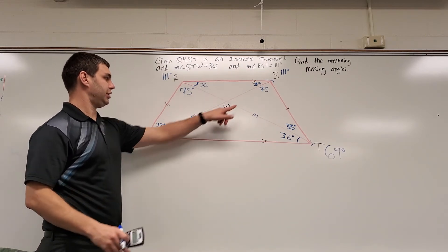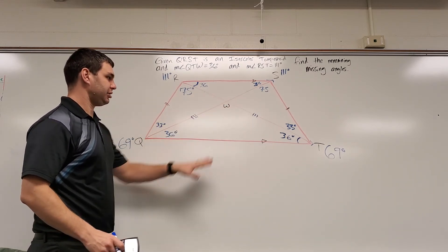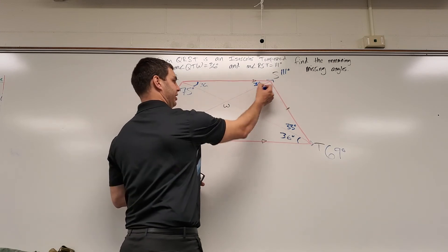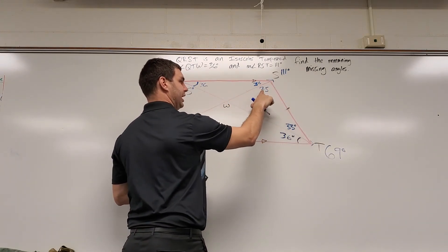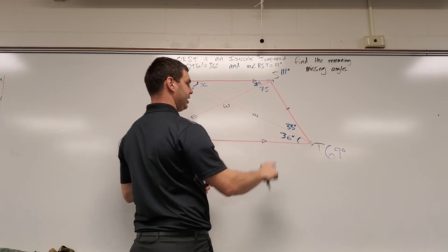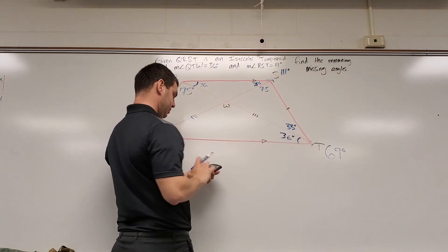Okay, a couple more angles to figure out. Those are the ones that are in the middle. Let's look at maybe this triangle. If I think of this as a triangle over here, I have 75 and I have 33. If I add those together, that's 108.